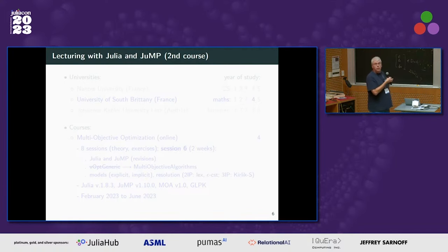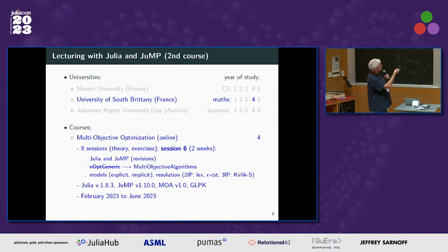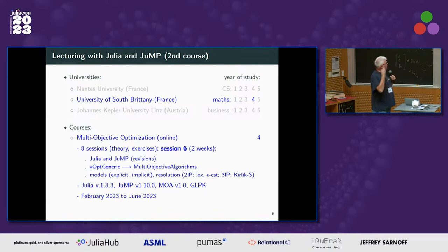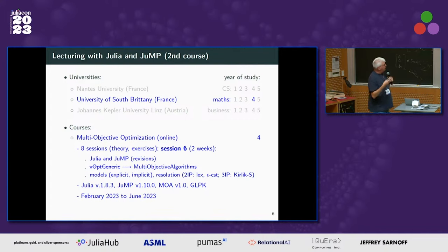About the second course where I lecture, it is in South Brittany. The student profile there is mathematicians, and they already come with a background in Julia — Marc Sauvot, our colleague, introduced Julia in another course. We moved from a generic package we developed in the past to the multi-objective algorithm package. The objective for students is to write and solve multi-objective models using standard algorithms: lexicographic method, epsilon constraint method, and with three objectives, the Kirlik-Sayin algorithm.